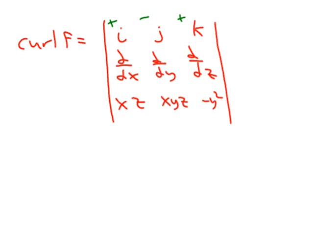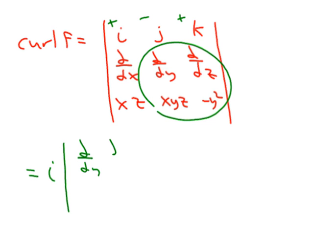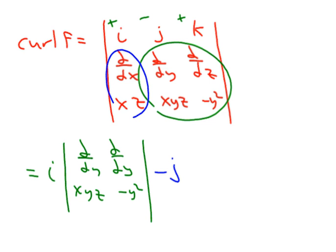This is going to equal i times its minor. The minor of vector i is the two-by-two determinant with partial y, partial z in the first column and xz, xyz, negative y² in the second. Then minus j times its minor — the minor of vector j contains these two elements together in a two-by-two determinant.